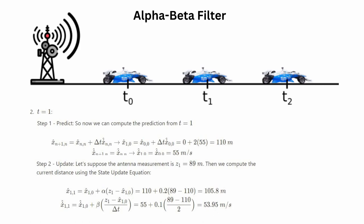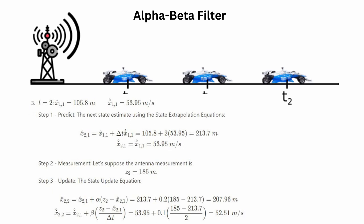At time instance two, we do the same: state predict step uses laws of motion with the previous estimates. We assume velocity is constant between time steps 1 and 2. Since the estimated velocity from time step 1 was 53.95 meters per second, that is what we use. The measurement value is 185 meters, and after the update step at time instance 2, we get updated estimates of position and velocity.